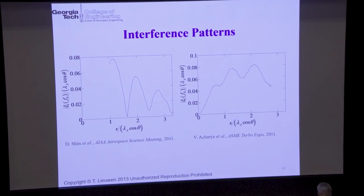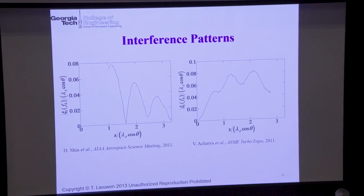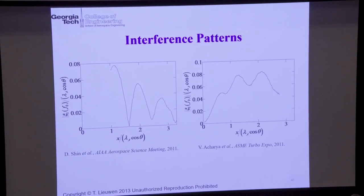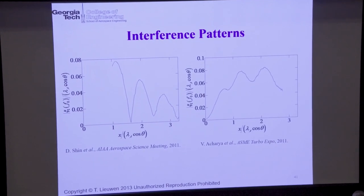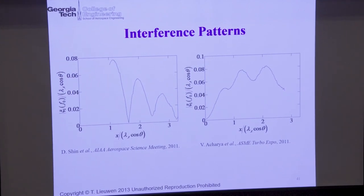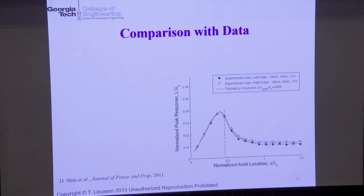My point is that not all velocity is the same for a flame — the flame cares about how fast that wrinkle is moving. If the disturbance is moving really fast, it'll give you shorter wavelength modulations. If it's moving slower, it'll give you longer wavelength modulations.